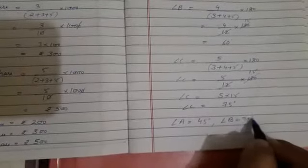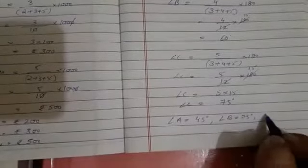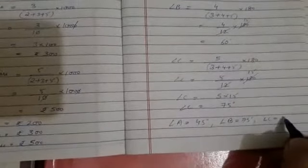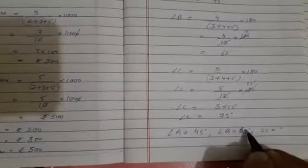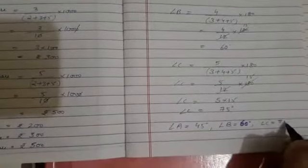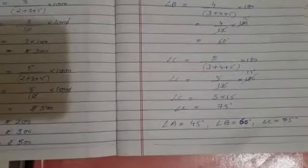So we get all the angles. Angle A is 45 degrees, angle B is 75 degrees, and angle C is... sorry, angle B is 60 degrees, angle C is 75 degrees. Angle A is 45 degrees, angle B is 60, angle C is 75 degrees. Thank you very much.